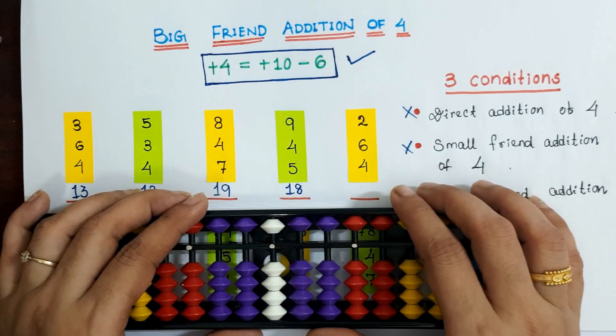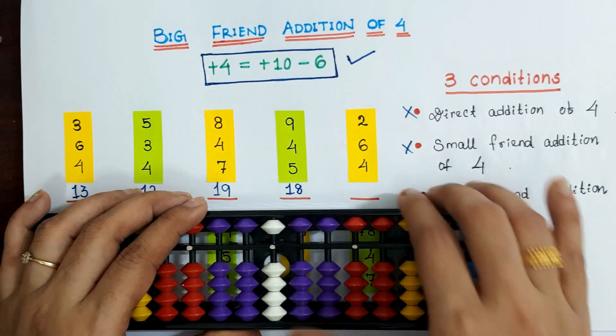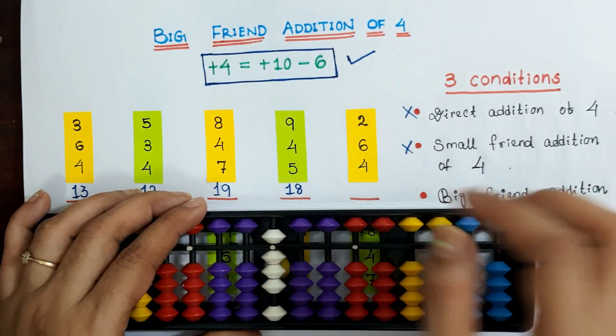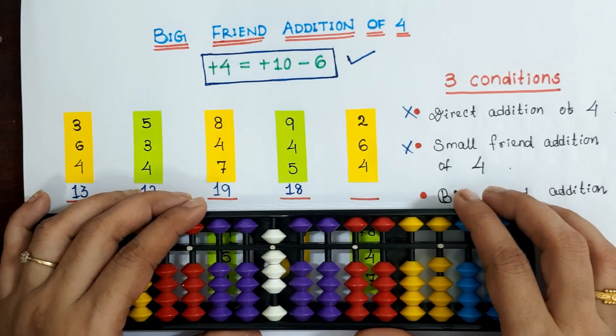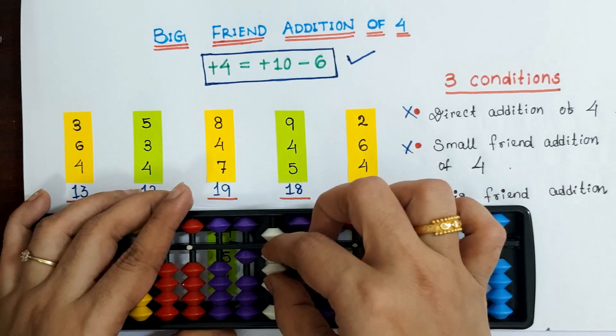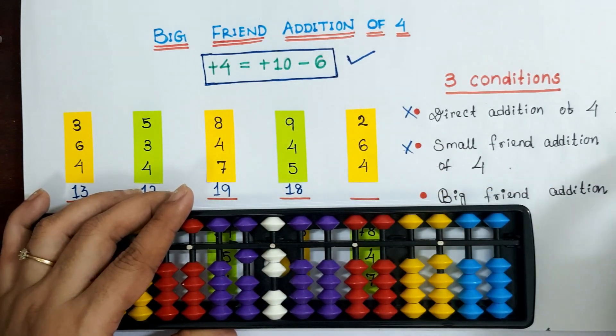Next question: 2 plus 6 plus 6 plus 4. For 2 plus 6 plus 4, using plus 10 minus 6. Answer is 12.